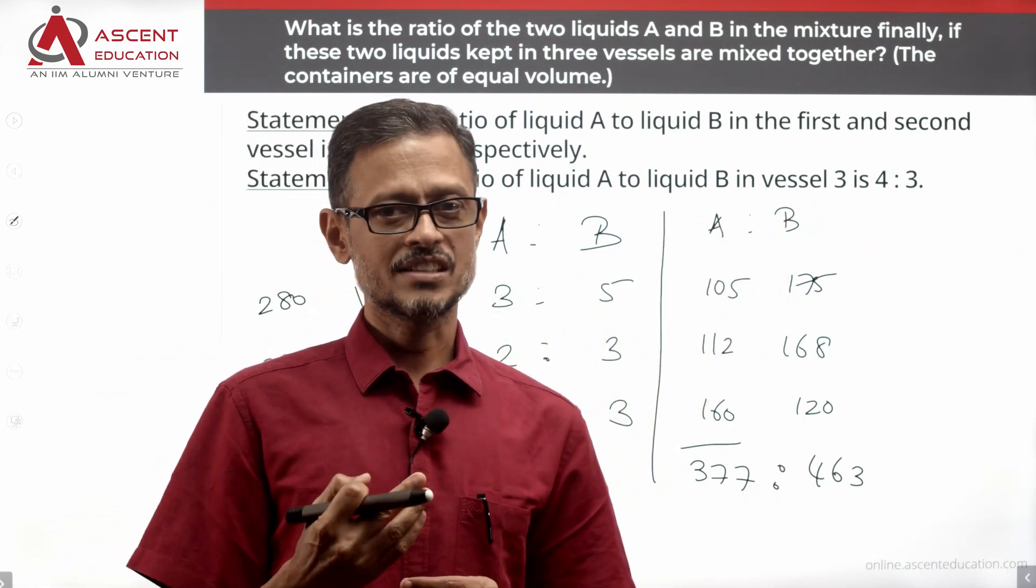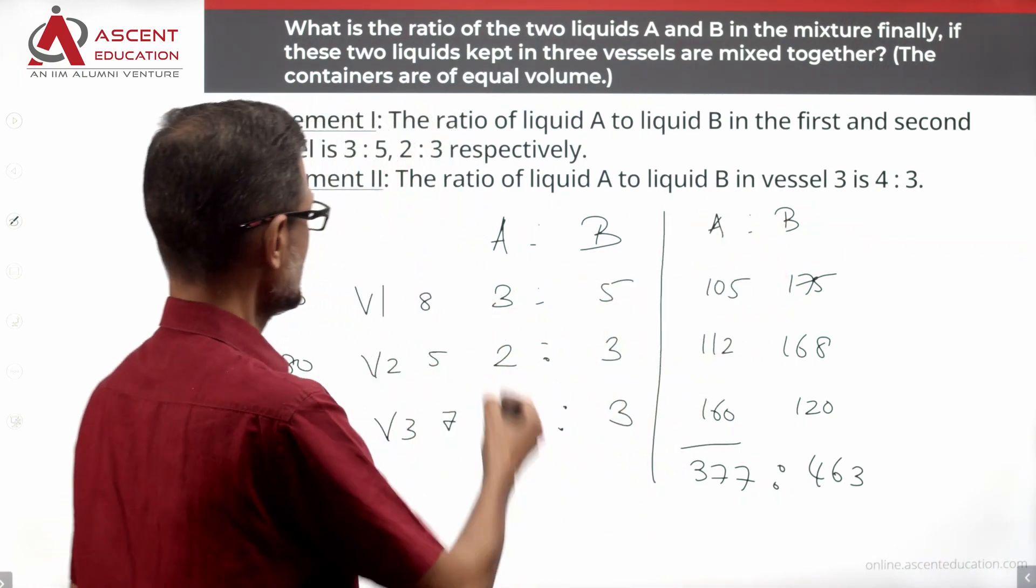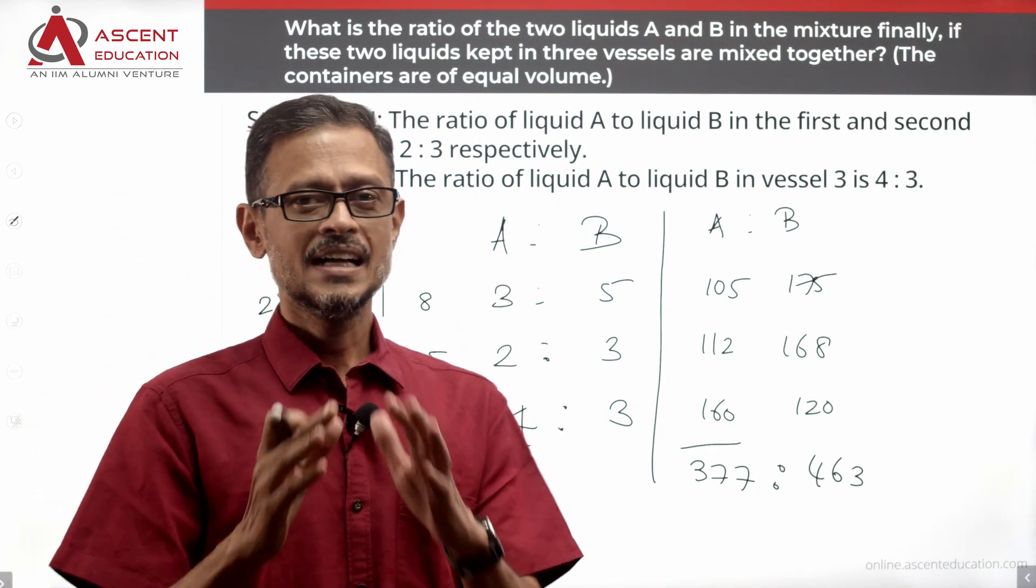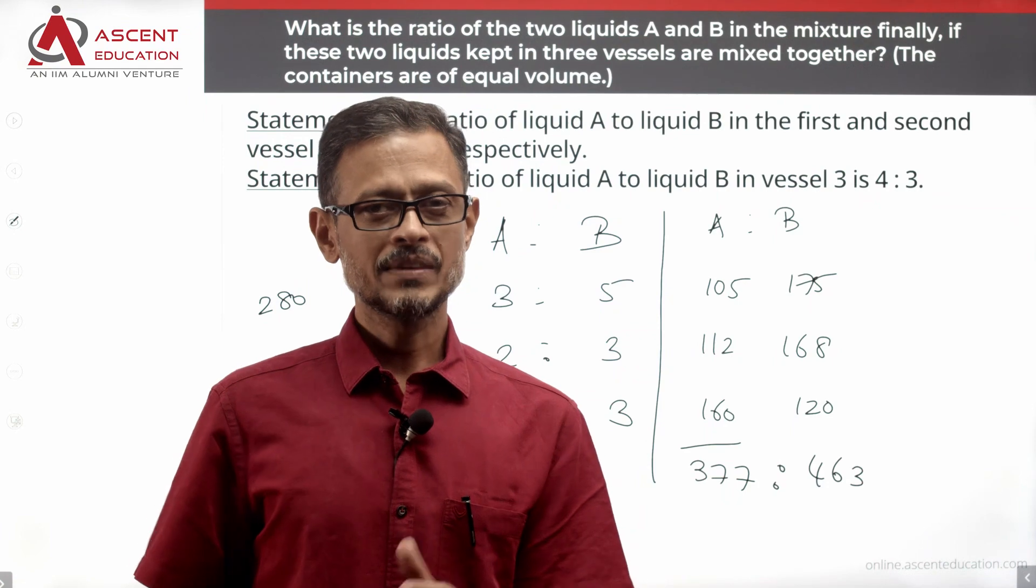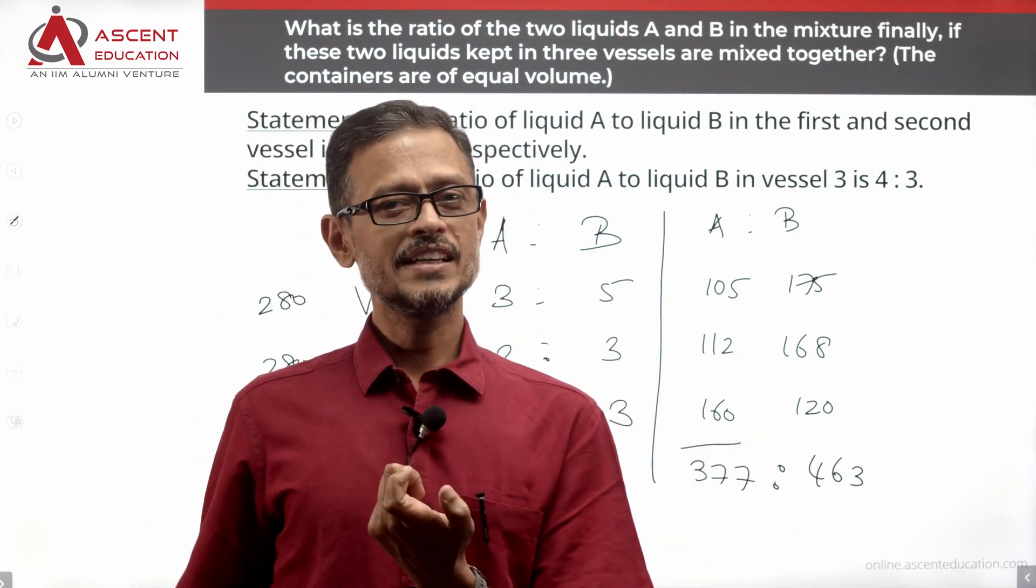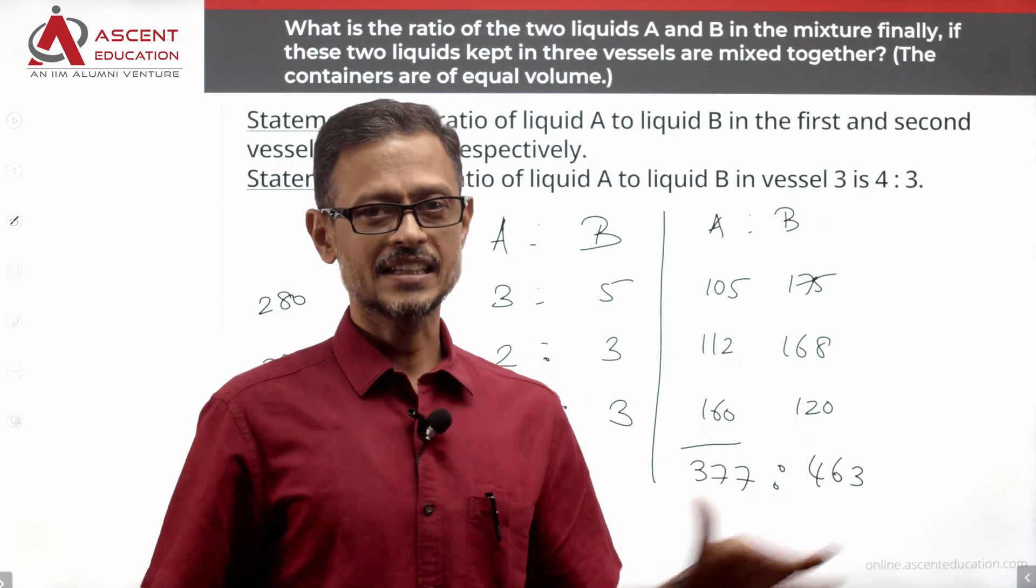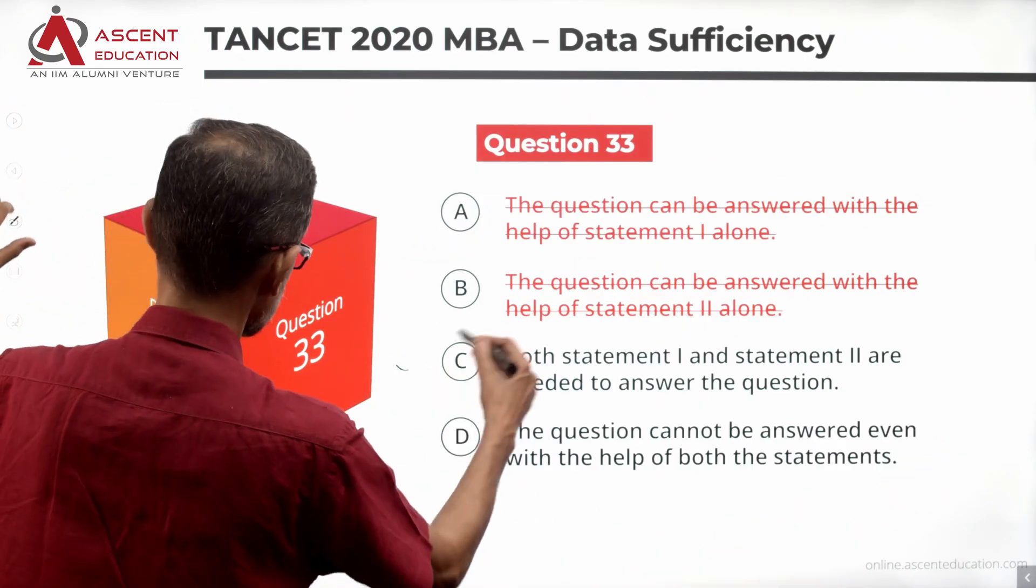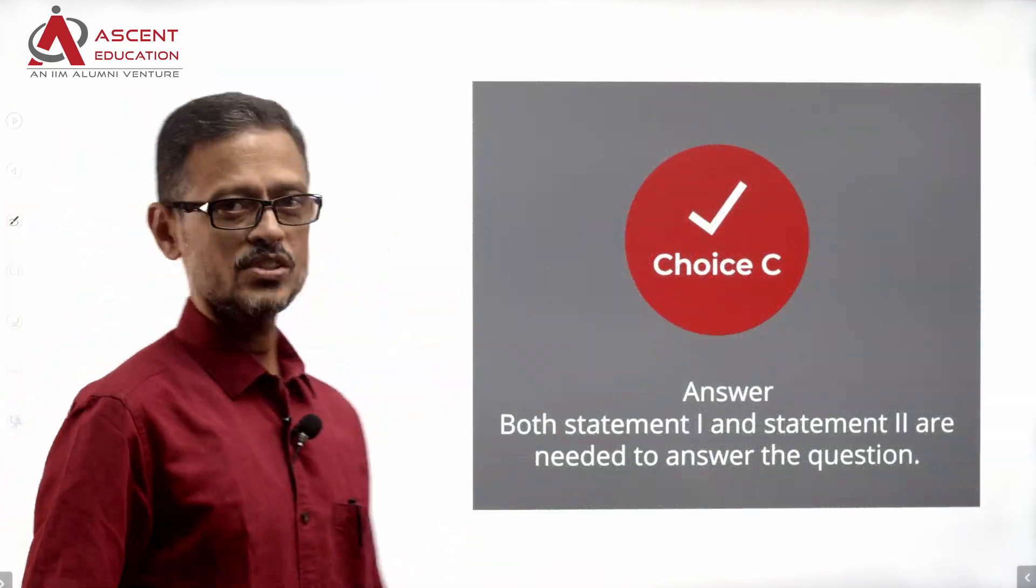This is a data sufficiency question. We have to know that together the statements are sufficient. Choice C is the answer to this question.